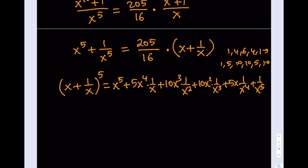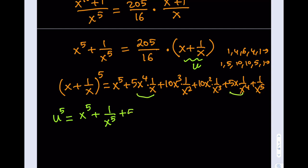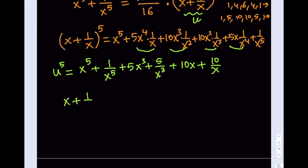Let's simplify this. We don't know what x plus 1 over x is equal to, so let's use a variable u for that. Then u to the 5th power equals, from the expansion: x to the 5th plus 1 over x to the 5th (first and last terms), then 5x cubed plus 5 over x cubed, plus 10x plus 10 over x. I can simplify further, keeping x to the 5th plus 1 over x to the 5th. My eventual goal is to write everything in terms of u, and I also have to handle the x cubed terms. So I'm going to cube u.